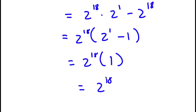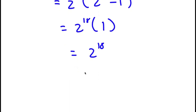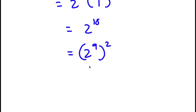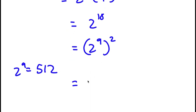Now I'm going to simplify this to get the exact value of 2 to the power of 18. So 2 to the power of 18 is the same thing as 2 to the power of 9 to the power of 2. And 2 to the power of 9, as most of you probably know, is 512.